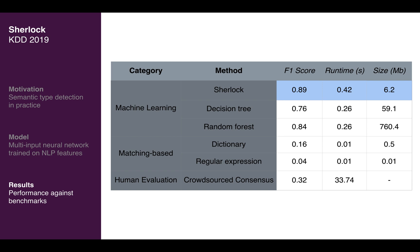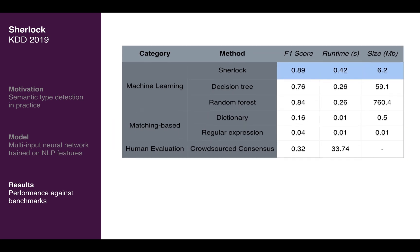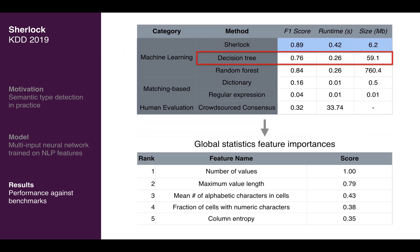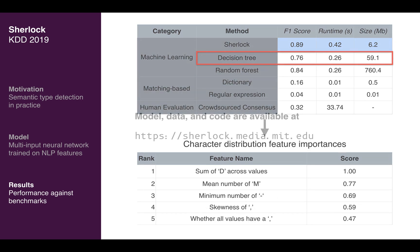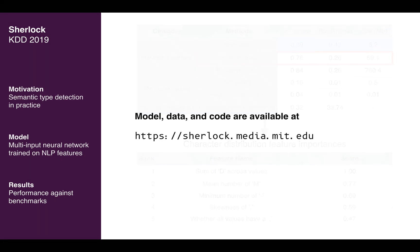To close, we extract and interpret the 10 most important features of the decision tree baseline model belonging to the global column statistics and the character distribution statistics categories. The trained model, training data, and code are available at sherlock.media.mit.edu.